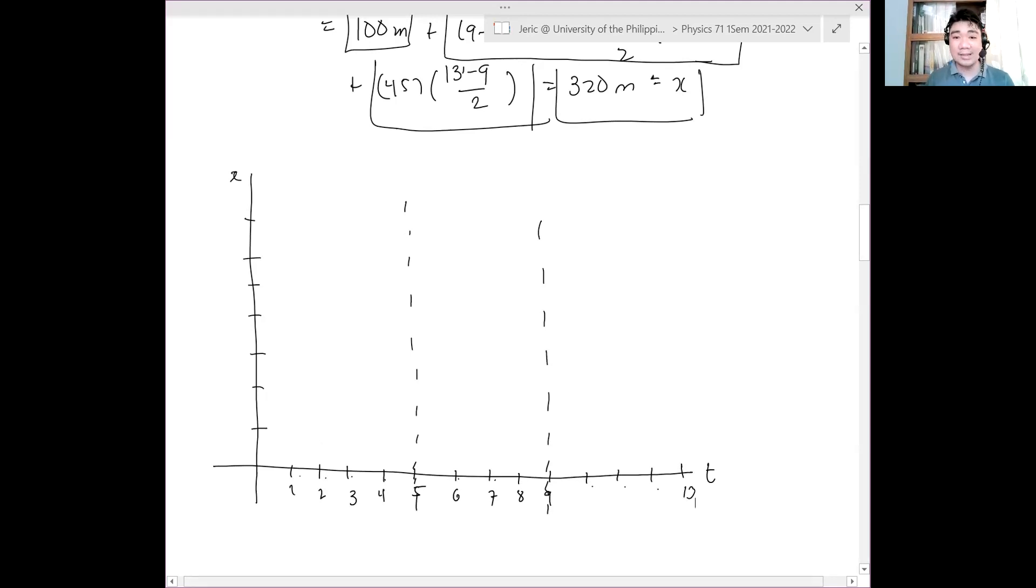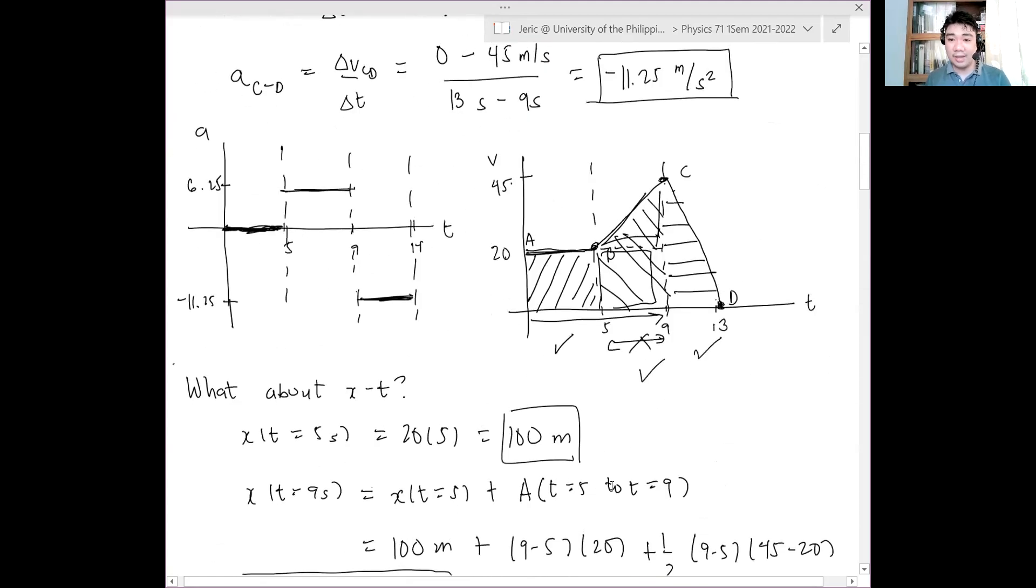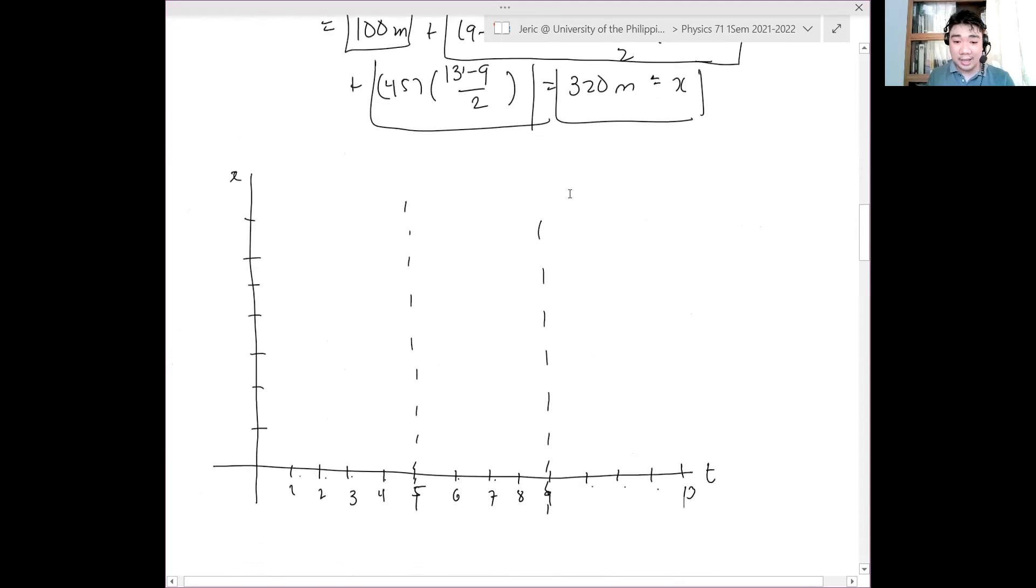Let's go back to the example. From 0 to 5, this is a horizontal line. Therefore, what can you expect for the position? If the velocity is positive, the position should be increasing with constant slope, right? Exactly. So in that case, we need to draw a line joining the origin and t equals 100. This is the curve for t equals 0 to t equals 5.